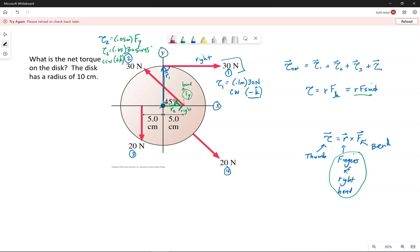Okay, force three. The lever arm, we start at the rotation axis and go out to the force. So R3 points to the left. It has a length of five centimeters, so 0.05 meters. The force is 20 newtons, the angle between them is 90, so sine of 90 is 1.